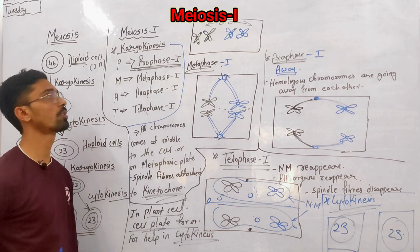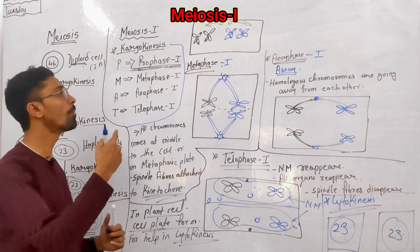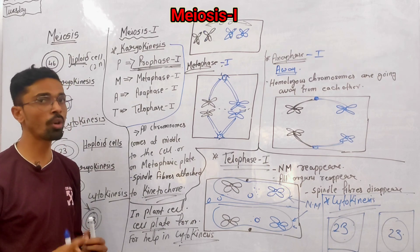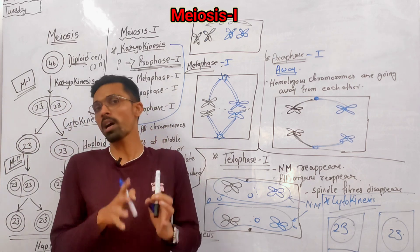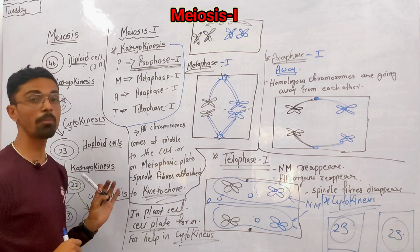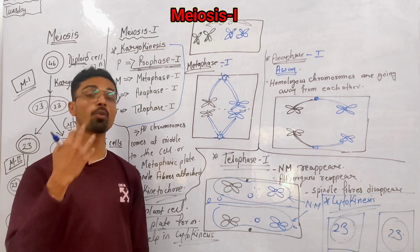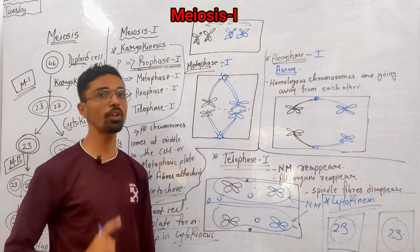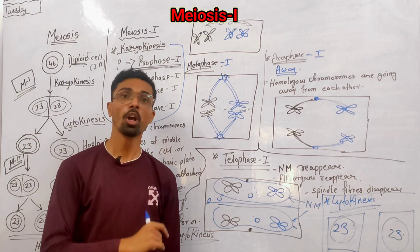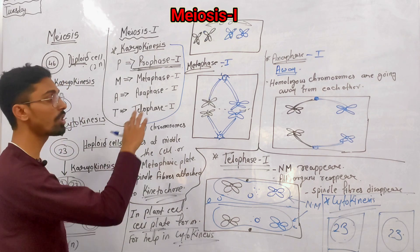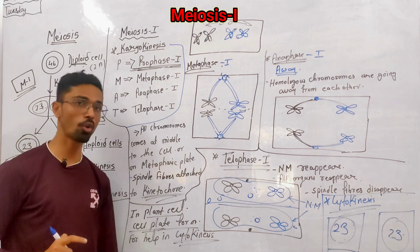So we have completed meiosis 1. In the next video, we will see meiosis 2, which is similar to mitosis — how these two cells basically form four daughter cells with the same number of chromosomes. Hope you have understood the processes after prophase 1 in meiosis 1. Thank you so much.